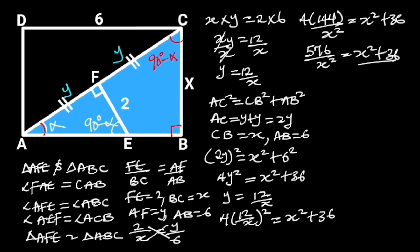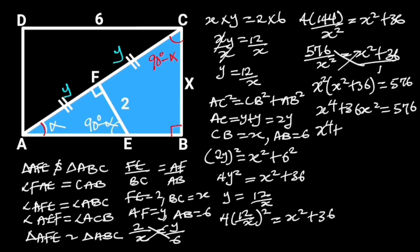Next, we multiply through by X squared to clear the fraction. And this will give us X squared times X squared plus 36 is equal to 576, which is equal to X power 4 plus 36 X squared is equal to 576. And this equation can be written as X power 4 plus 36 X squared minus 576 is equal to 0.